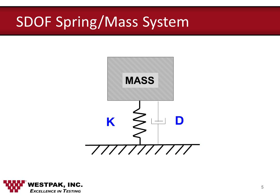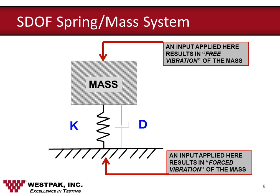Those are the background criteria that define our idealized single degree of freedom spring mass system. Any input applied to the mass in the spring mass system will result in what we call free vibration of the mass. Any input applied to the foundation results in forced vibration to the mass. This terminology applies to all spring mass systems, and you will often hear those terms — free versus forced vibration.